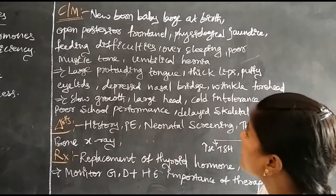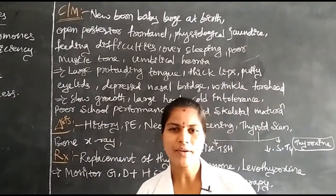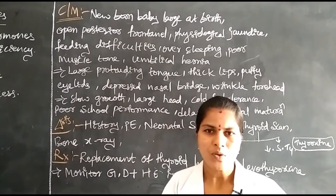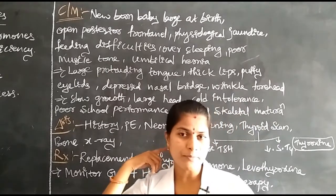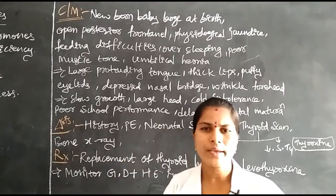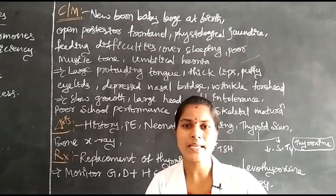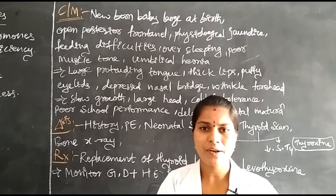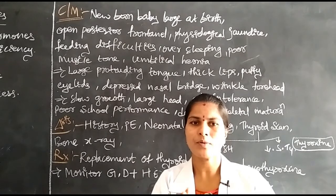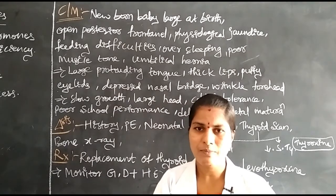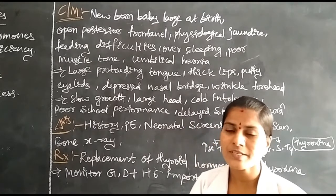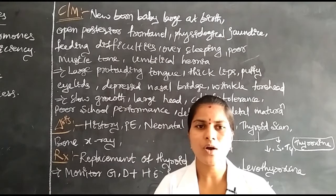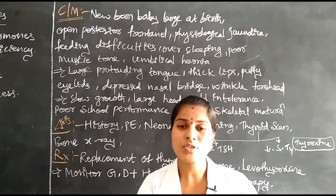Another sign is the posterior fontanelle being open. In a newborn baby there is an anterior fontanelle and a posterior fontanelle — the gap between skull bones. Normally the fontanelle closes from one to two months of age. However, in children with hypothyroidism, the posterior fontanelle remains open.